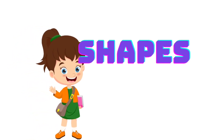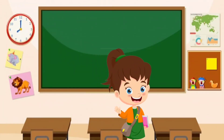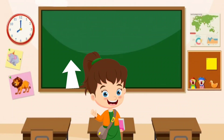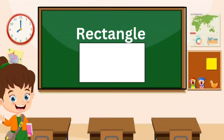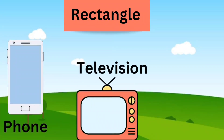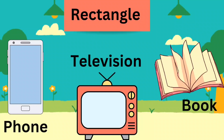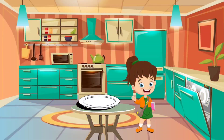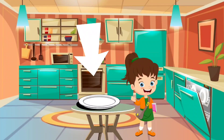Hi kids, let's learn shapes together. We are in my classroom. Look, there is a board behind me. What shape is it? Yes, it's a rectangle shape. Some examples: phone, television, book. These all are rectangle shapes.